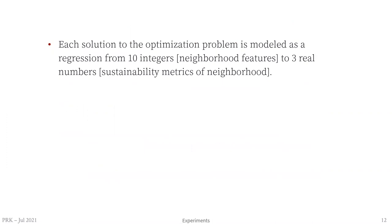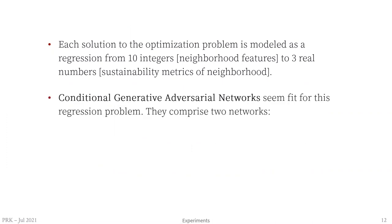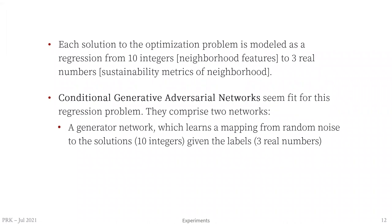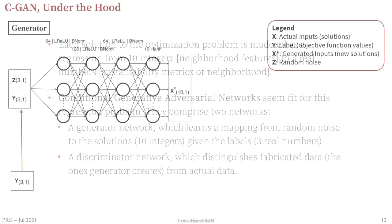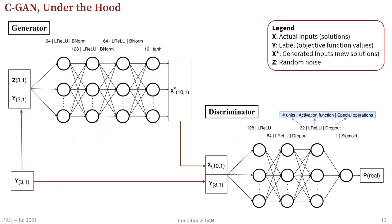Each solution is modeled as a regression from 10 integer input values representing neighborhood features to 3 real numbers representing the sustainability metrics. The conditional GAN is specifically fit for this problem, as it has been used recently for many regression problems with good performance. The model has two networks: a generator that learns the mapping from random noise to solutions given the labels, and a discriminator that distinguishes fabricated from real data. These are fully connected networks; the generator takes the label and noise to produce a potential solution, and the discriminator takes real or fabricated data with a label to output the probability of it being real.